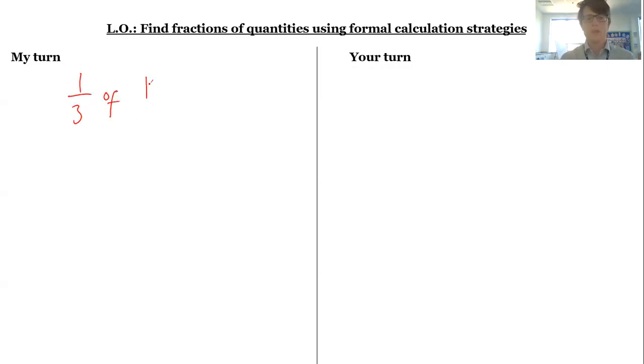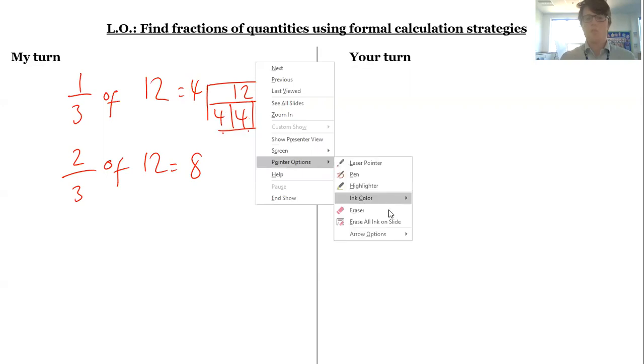For instance, in year four you might do things like finding one-third of 12. You split 12 into three equal parts: 12 divided by 3 is 4, so one-third is 4. If you want two-thirds, you count two parts to get 8. Now we're looking at this in a slightly more formal way.